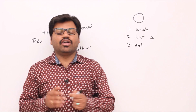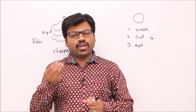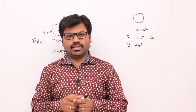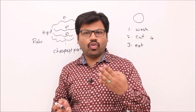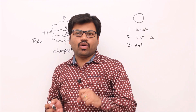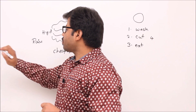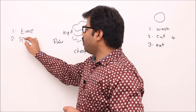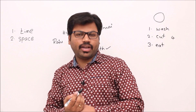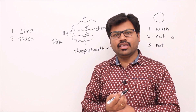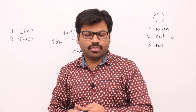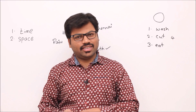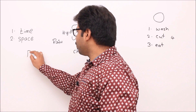Now the second question: what are the things you have to study about algorithms? There are two properties we have to focus on whenever we study any algorithm. One is time complexity, and the second is space complexity. The reason: whenever you write algorithms, especially for computer science, they are going to be executed on a computer.